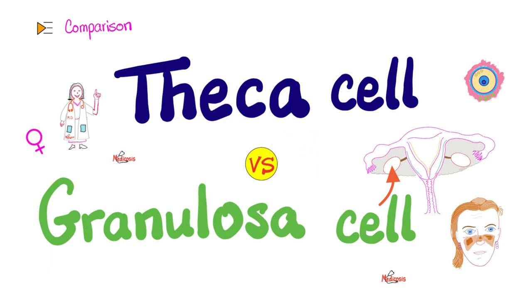Today it's a topic in the reproductive system: the theca cell versus the granulosa cell. Both of them exist in the ovary. One is going to make an androgen, and the other one is going to make an estrogen. Let's get started.